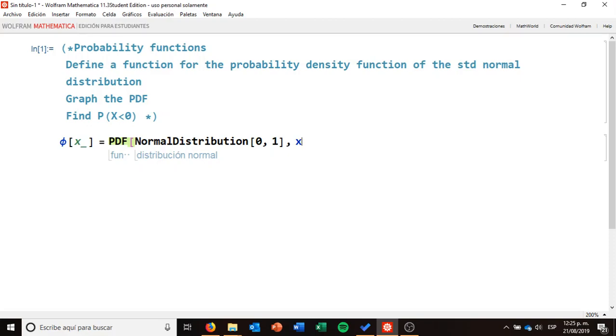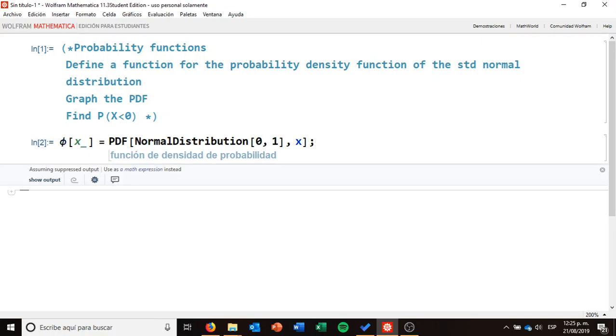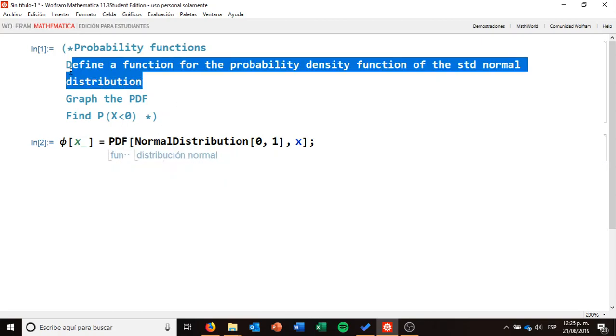And in this case, it is x, the same input that we have on this function. So I don't want to show anything. So I'm just going to write a semicolon, I press shift return, and I already have this function phi, that is telling me that this is the probability density function of the normal distribution that was the first exercise.